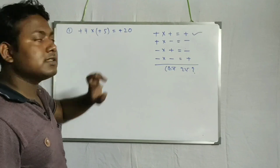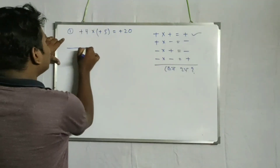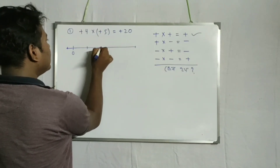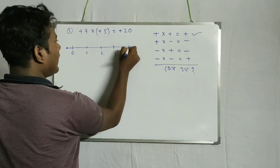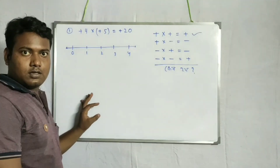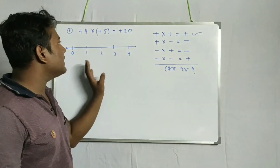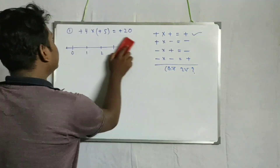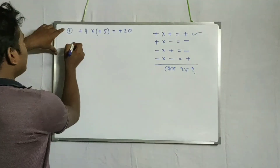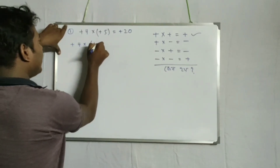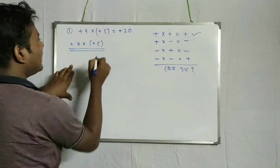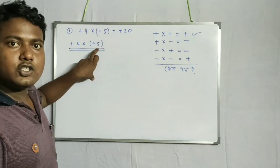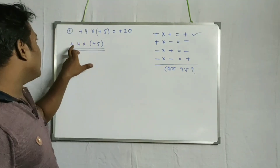Plus times plus equals plus. If you see this — plus 4 into plus 5 — this means that plus 4 is taken 5 times, or plus 5 is taken 4 times.